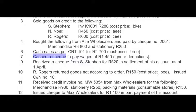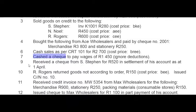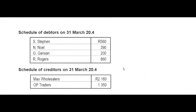On the 7th we cashed a cheque to pay wages — a basic CPJ wages transaction. Remember that the details for wages must say 'cash.' On the 9th we received a cheque from S. Steven for 520 rand in settlement of his account at 1 April. He owed us 560 rand and settled by only paying 520 rand, which implies that we gave S. Steven 40 rand discount.